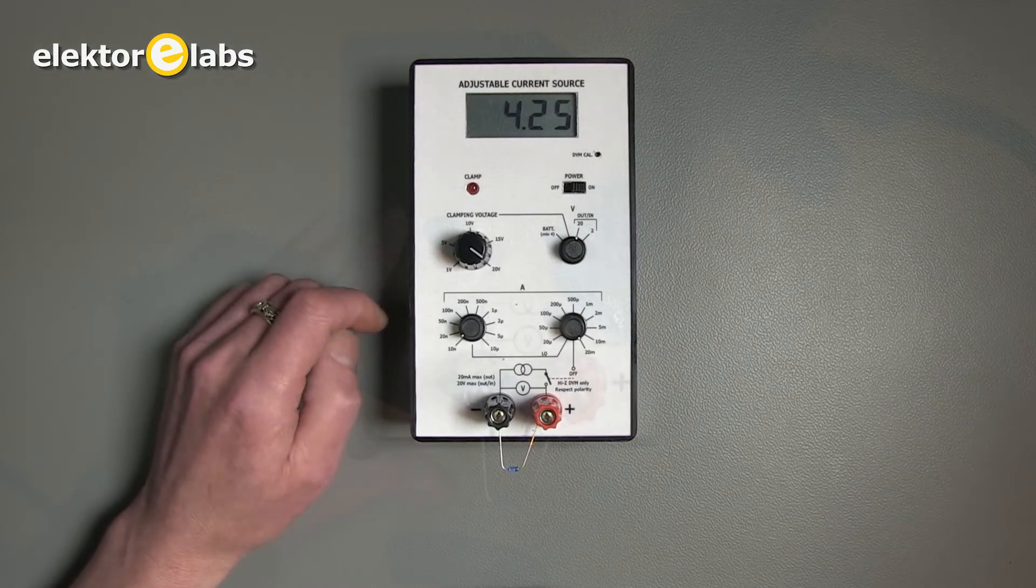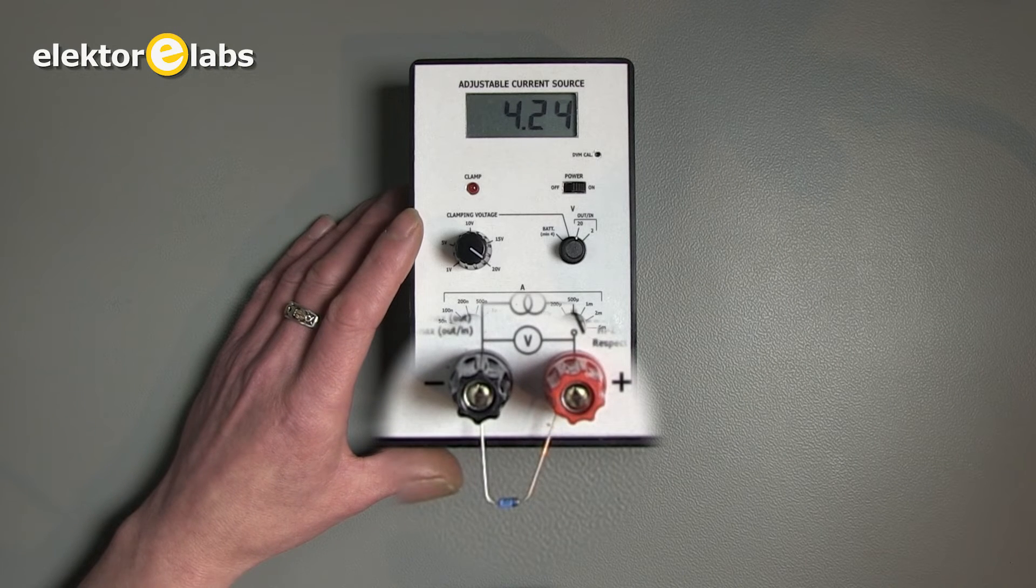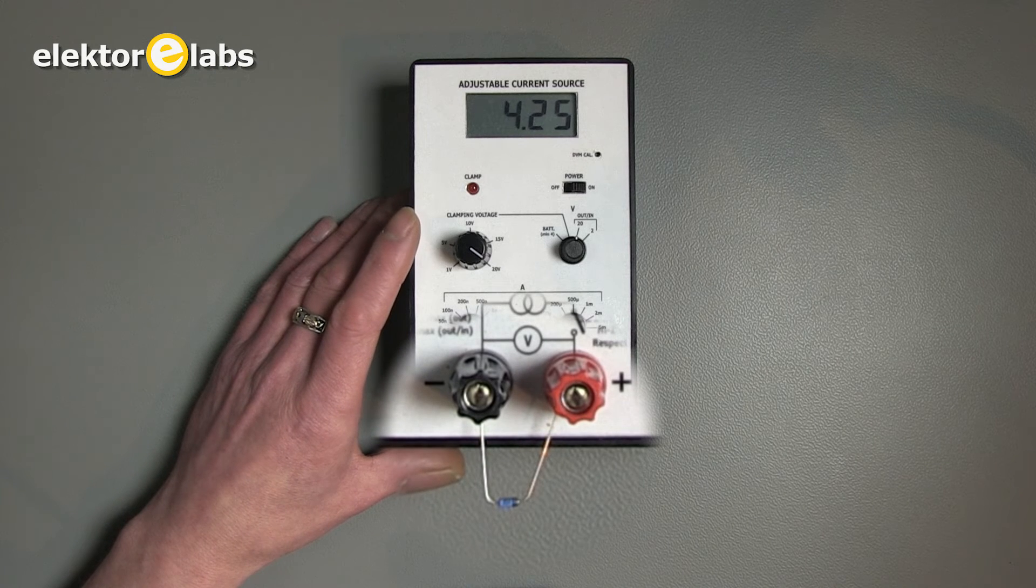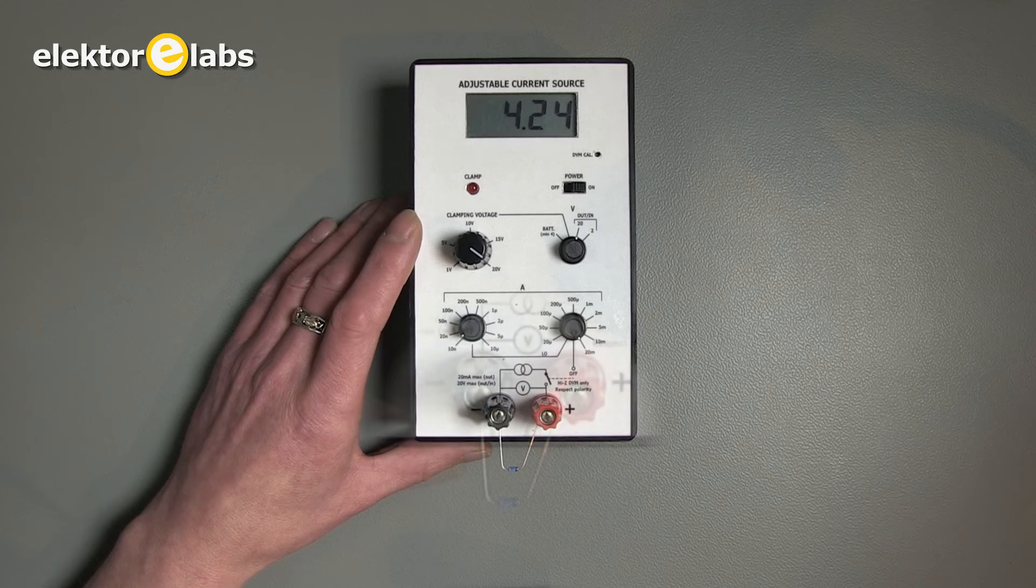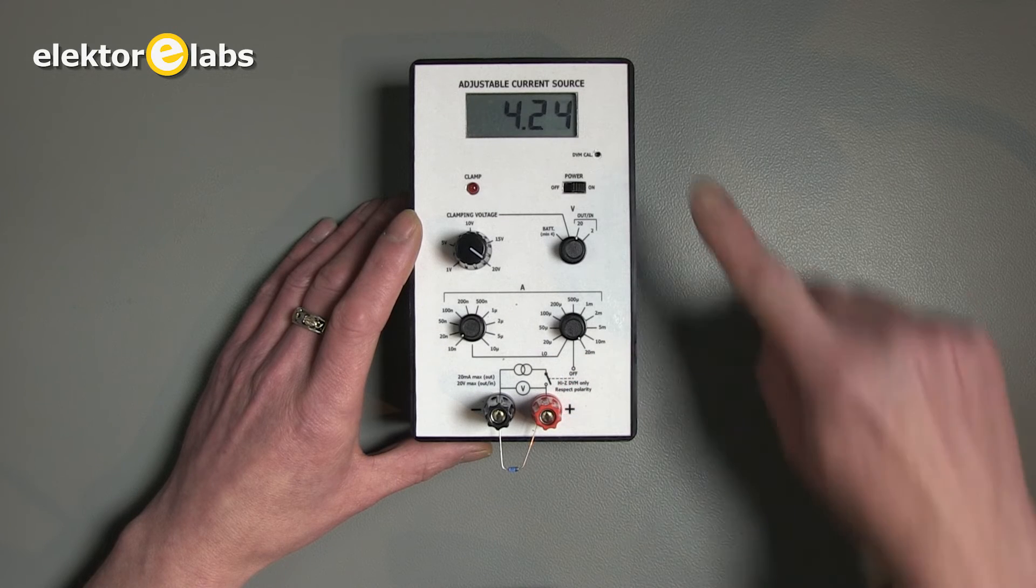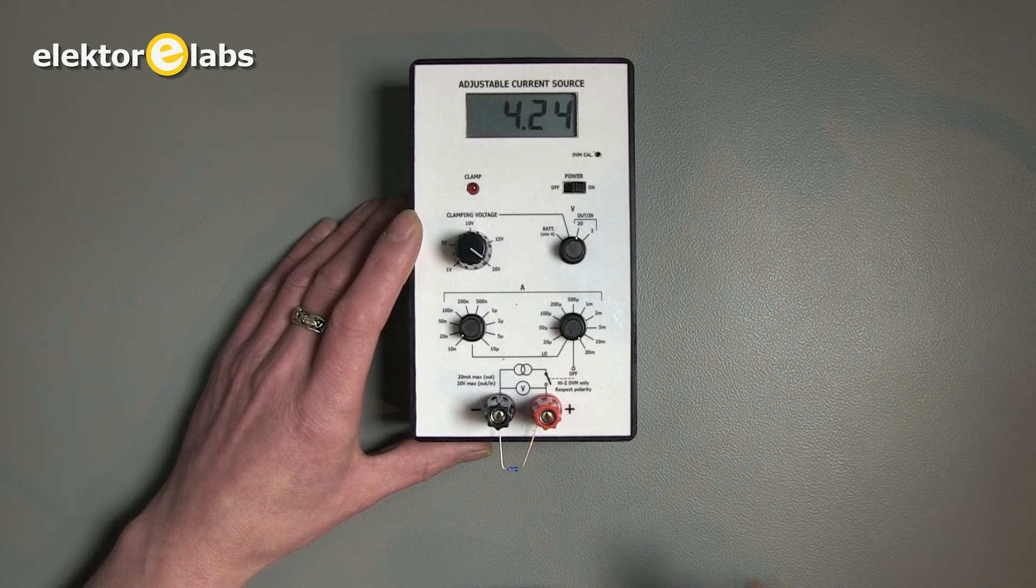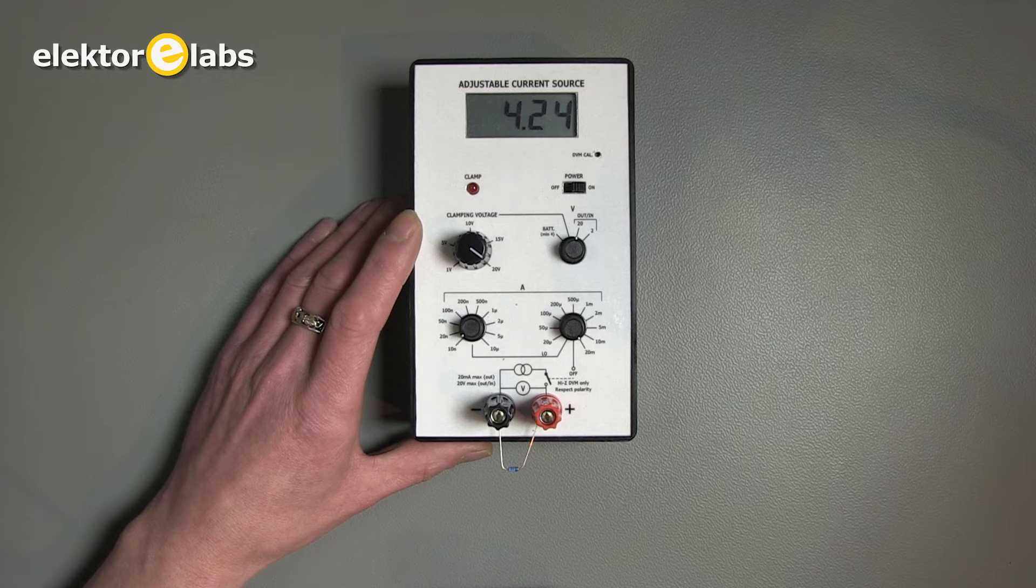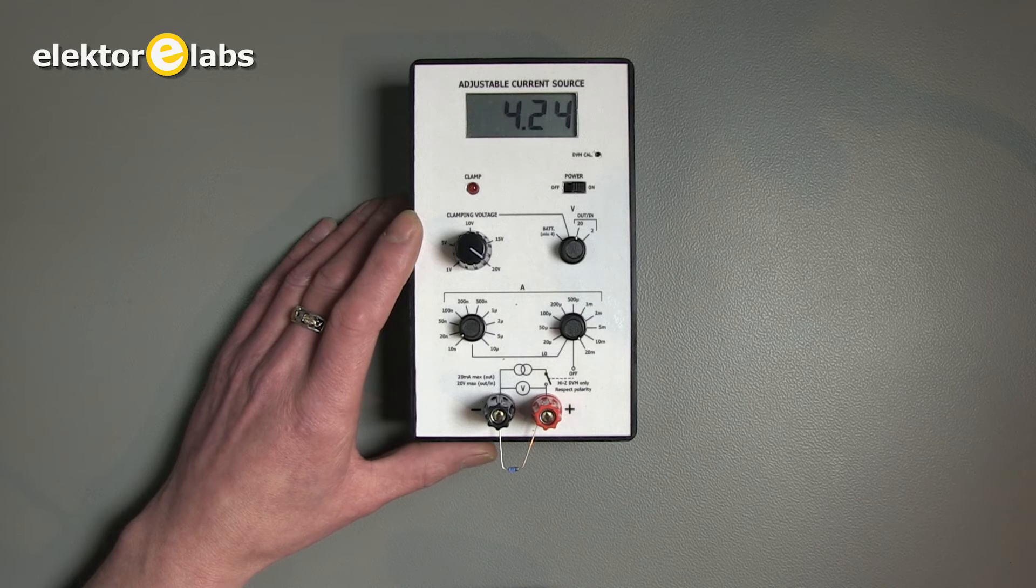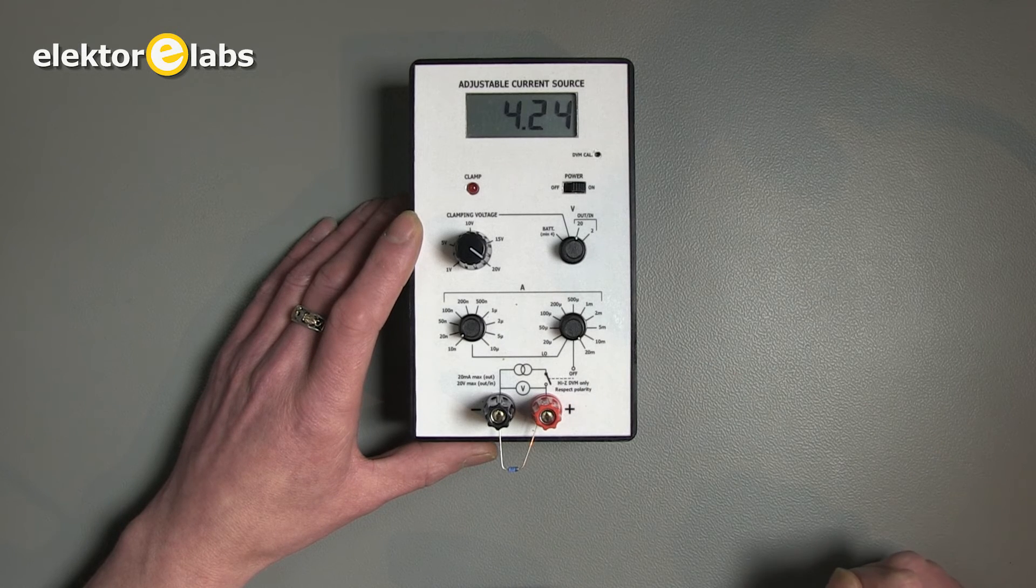Okay, next we have a 3.9 volt zener diode connected in reverse. We can measure the voltage as a function of the current flowing through this diode. Now I have it at 20 milliamps.